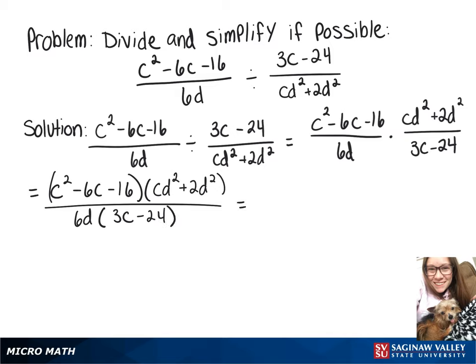On top, we have a quadratic that we can factor, and that will turn into c minus 8 times c plus 2. And with that second set of parentheses on top, we can factor out a d squared, so I'll bring that out front, and that will leave c plus 2.